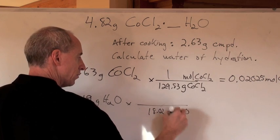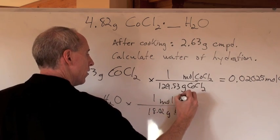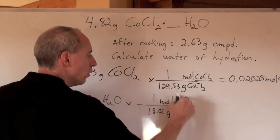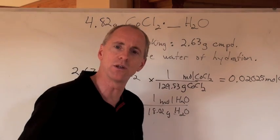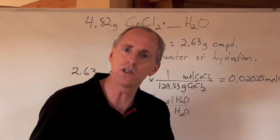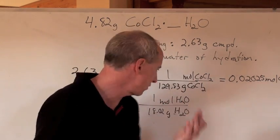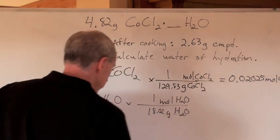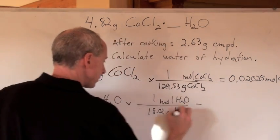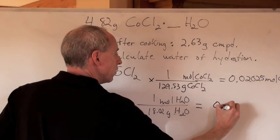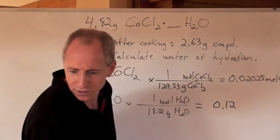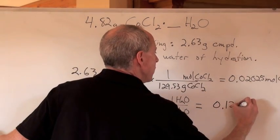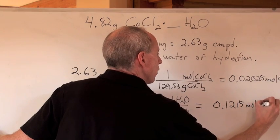When you find the moles of water, by taking the molar mass of water, which is 18.02 grams of water for every 1 mole of H2O, look how I always write those H2Os and everything for unit cancellation purposes. That's what you're supposed to do. Your teacher's going to love that. You're going to get good marks. When you do that math, you get 0.1215 moles of water.